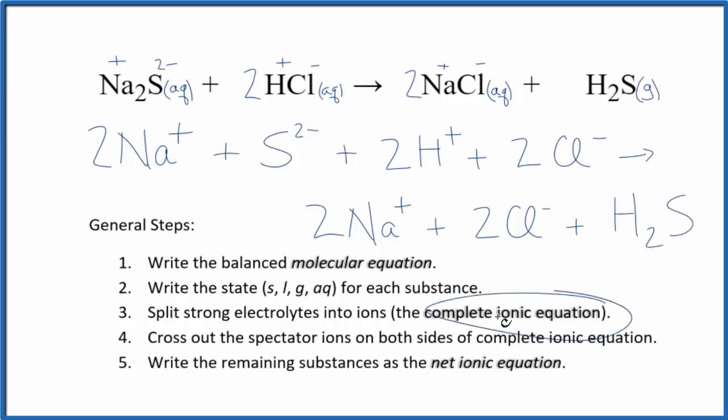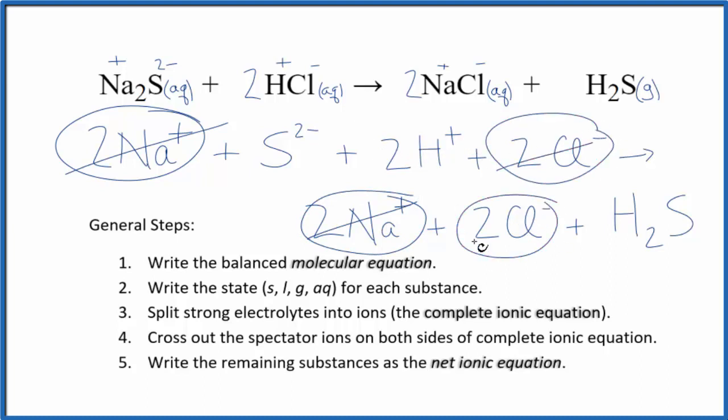Now we can cross out spectator ions. They're on both sides of the complete ionic equation. They haven't changed. So we're really not interested in them. Here's our reactants. And here's our products. I can see there's two sodium ions here. And then in the products. We don't need those. Two chloride ions. Again in the products. So what's left, that's the net ionic equation for Na2S plus HCl. I'll clean this up and add the states in. We'll have our net ionic equation.